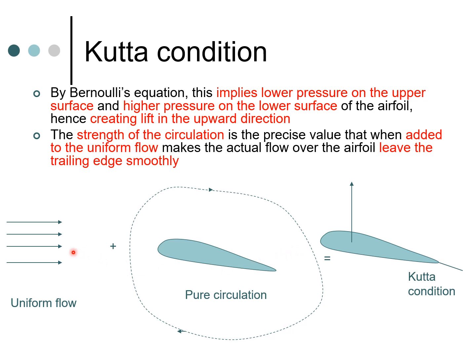So this is what we essentially mentioned in the previous slide. The uniform flow plus the circulation is equal to a generation of lift here, and this is in the clockwise direction. So what will happen is that this is going to cause a lower pressure on the upper surface than a higher pressure on the lower surface.